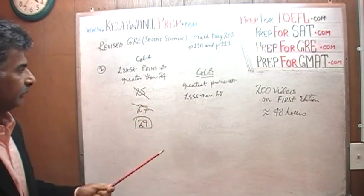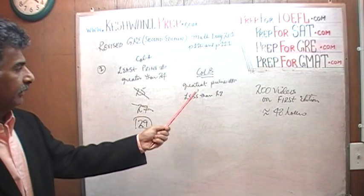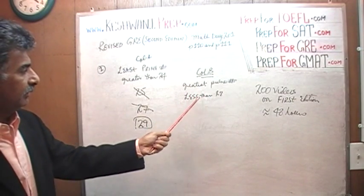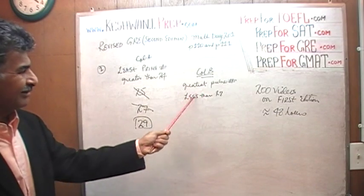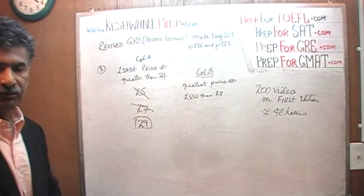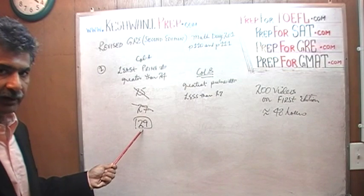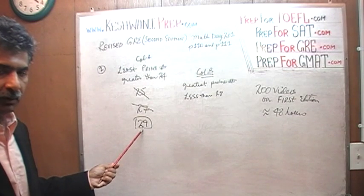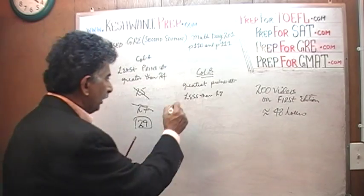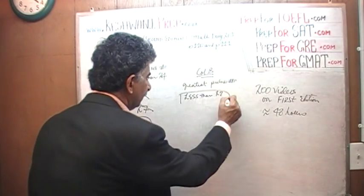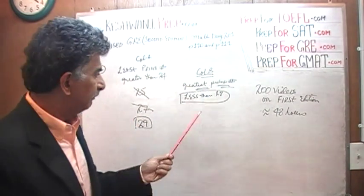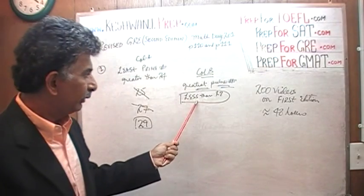Now let's look at the second column. It says: the greatest prime number less than 28. There is no point wasting our time trying to figure this out, because it is a moot point. We already found that the quantity in column A is 29, and whatever this happens to be — the greatest prime number — by definition it has to be less than 28.